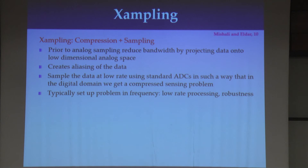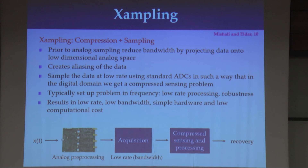After we've done all this, in the digital domain we now have to figure out — we still have our detection problem. We have to figure out from this collapsed set of subspaces which was the correct subspace, and this we do in the digital domain using the recent ideas of compressed sensing.